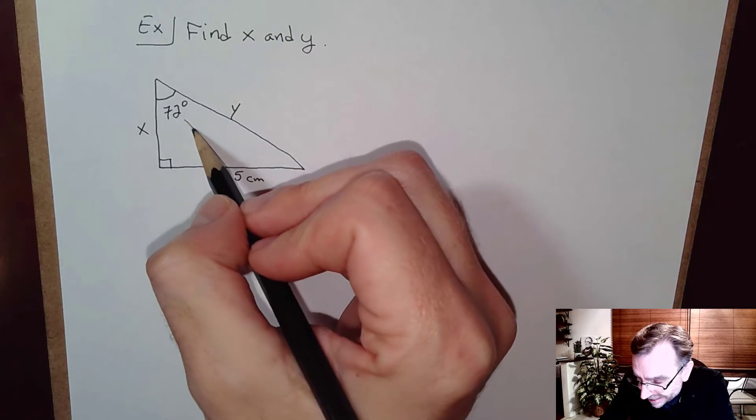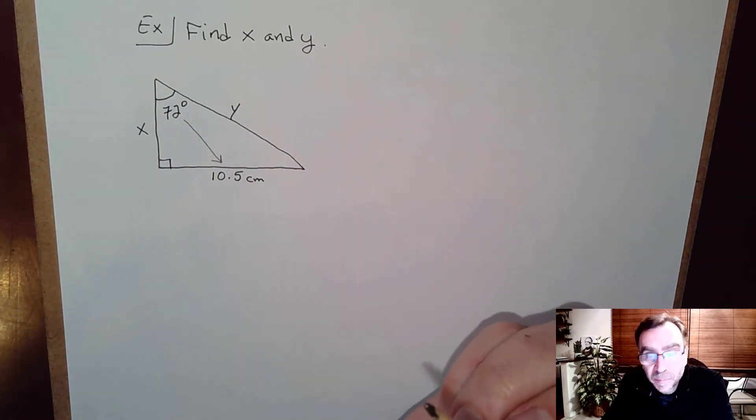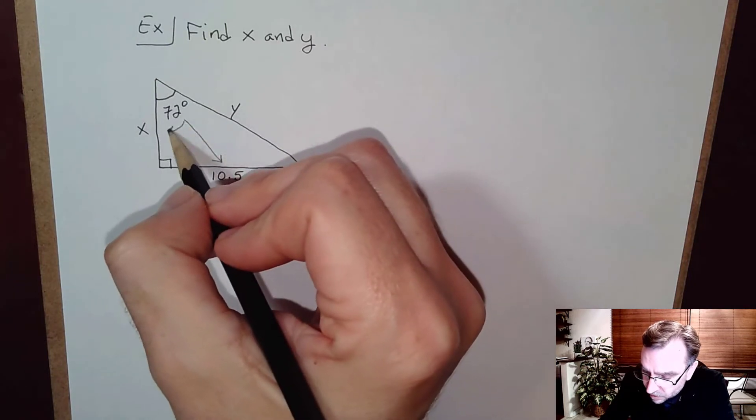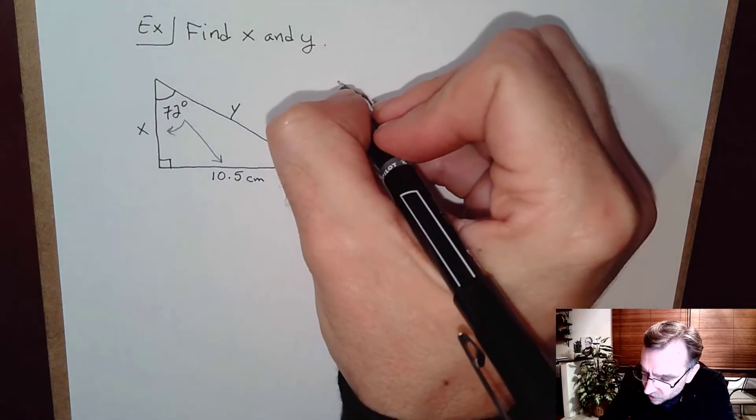So I'm going to look at 72 degrees and I can see that the side, the length of the side opposite is given and I want to find x. So I'm thinking opposite over adjacent again. So I'm going to use tangent.